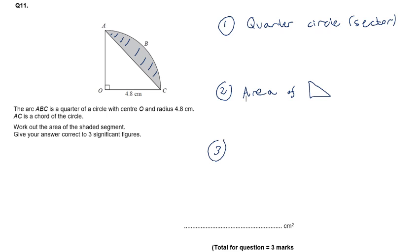And then thirdly I will subtract, because if I do the full quarter circle subtract the triangle, I'll get left with just the shaded area. So to do that then, my quarter circle: the area of a circle is pi times the radius squared, and then we divide by 4 because this is a quarter. Then I would do pi times 4.8 squared divided by 4. Inputting that into my calculator, it's going to give 18.0955.